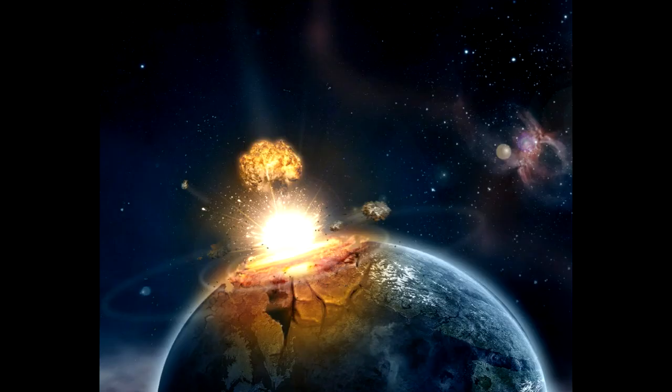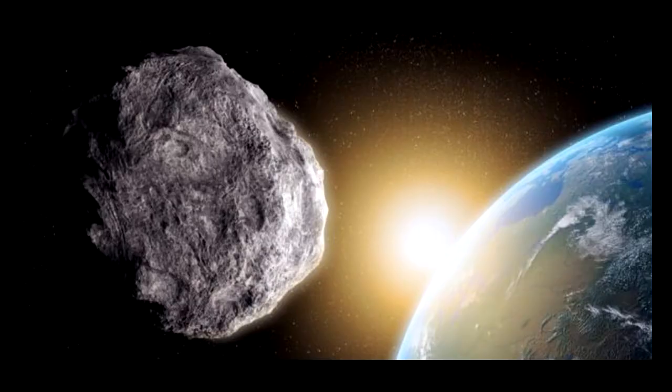The OSIRIS-REx probe will arrive in 2018 then spend a year surveying Bennu, which orbits the Sun at 63,000 mph. Scientists are hoping that information gathered on the trip will help them to work out how the asteroid's course is affected by absorbing and radiating sunlight.